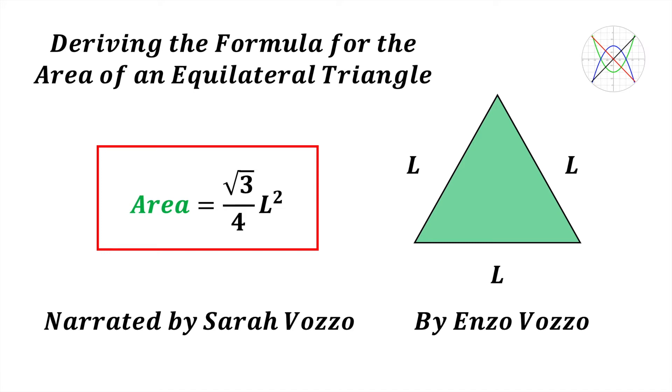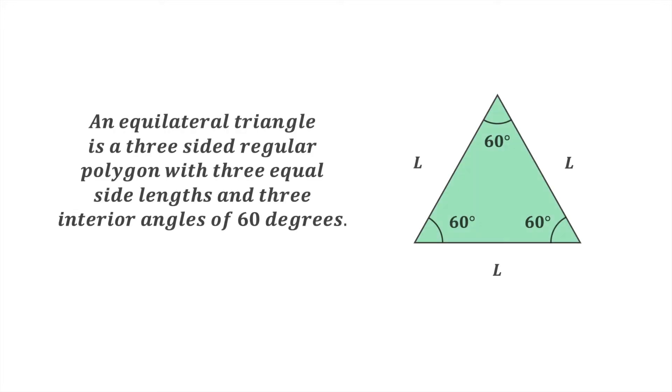Hello and welcome to Maths Whenever. In this video we're going to derive the formula for the area of an equilateral triangle. An equilateral triangle is a three-sided regular polygon with three equal side lengths and three interior angles of 60 degrees.